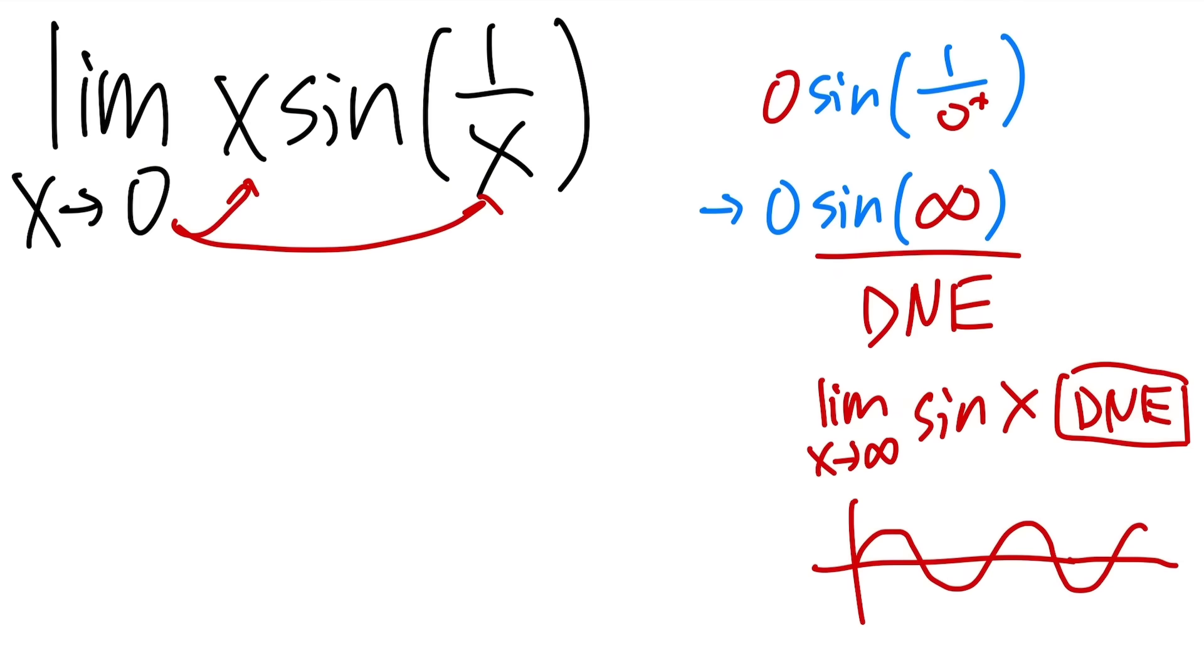So now the question is, we have DNE here, does that mean the whole thing is DNE? Or maybe we have 0 times DNE, so it should be 0. Well, the truth is, we have to observe more and present a legitimate solution, and we cannot just say 0 times anything is equal to 0. That's not true when we're talking about limits. When you have 0 times infinity, well, we will have to do a lot more work for that, so it cannot say anything right away.